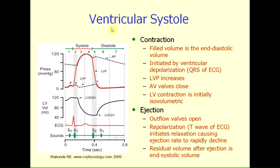This slide will now look at ventricular systole in more detail. The diagram on the left represents the changes that we see in ventricular pressure — that's the red line — as well as within the aorta and within the left atrium. Below that, we have the changes in blood volume found within the left ventricle, and below that we are showing the electrocardiogram, which we use as a marker for initiating different phases of the cardiac cycle. Below that are various heart sounds, which will not be described in this lecture.